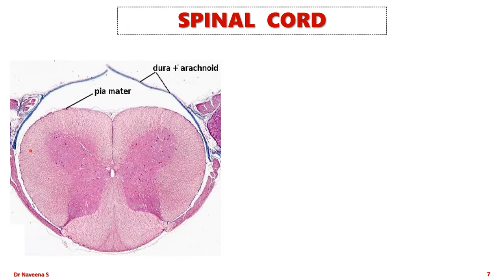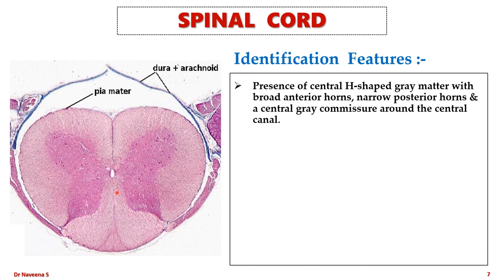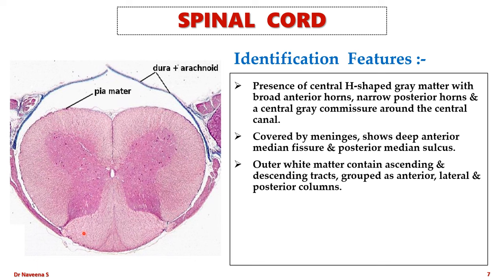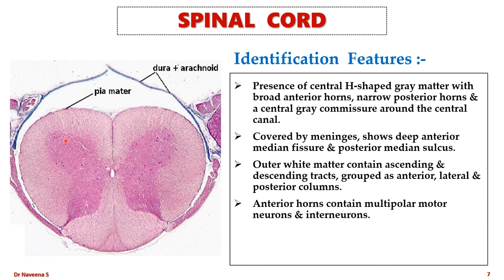Coming to the spinal cord. Here is the cross-section of spinal cord, which can be observed completely under a dissection microscope without any magnification. It can be identified by the presence of H-shaped grey matter with broad anterior horns and narrow posterior horns, connected through a central grey commissure around the central canal, which is lined by ependyma. The spinal cord is surrounded by meningeal layers and shows a deep anterior median fissure and a narrow posterior median sulcus. The spinal cord contains outer white matter and inner grey matter, with axons of nerve fibers running in anterior, lateral, and posterior columns as ascending and descending tracts.